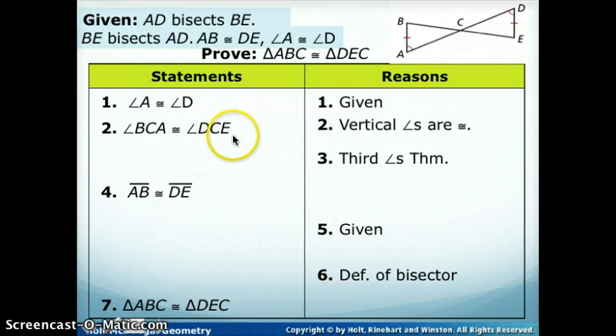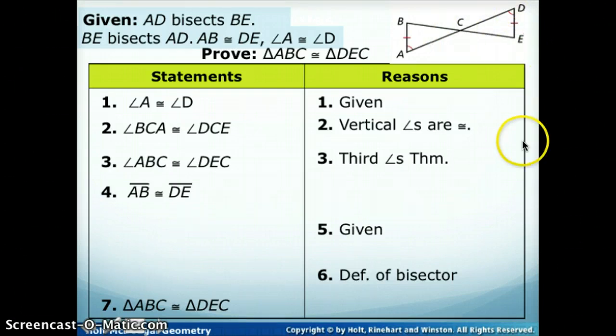And our next step, we have the reason third angle theorem, which we talked about just a little bit ago, that says if we have two angles in one triangle congruent to two angles in another, then we can say that their third angles are congruent. So we said this angle is congruent to this angle, these two vertical angles are congruent. So the third angle, B and E, are congruent. So ABC is congruent to DEC because of the third angle theorem.